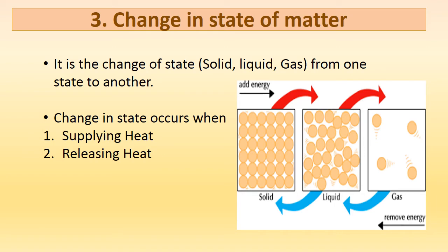The third effect of heat is the change in the state of matter. In nature, matter exists in three different forms: solids, liquids, and gases. Looking at the picture, you can observe the arrangement of particles in solids — the particles are very tightly packed to one another.